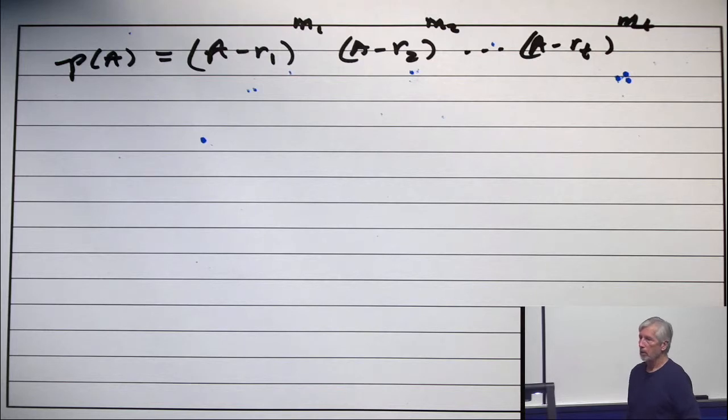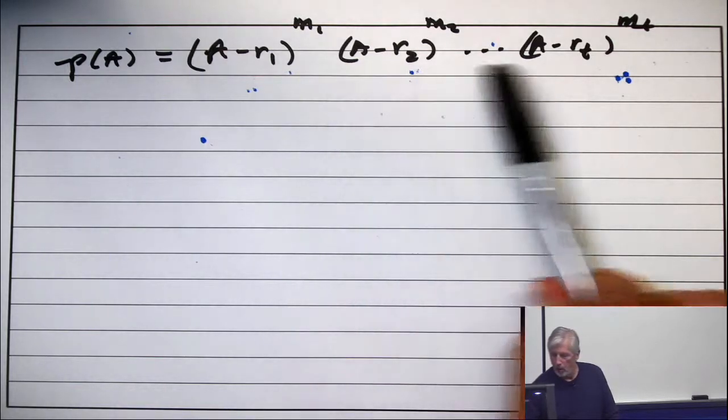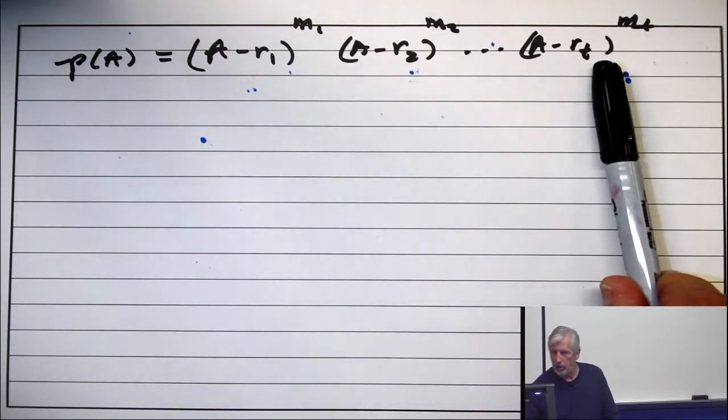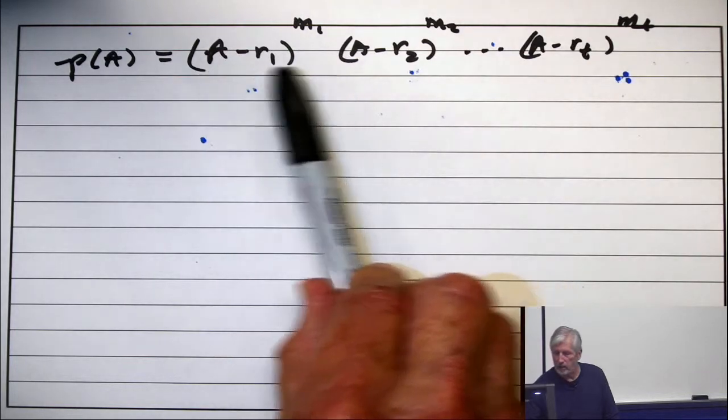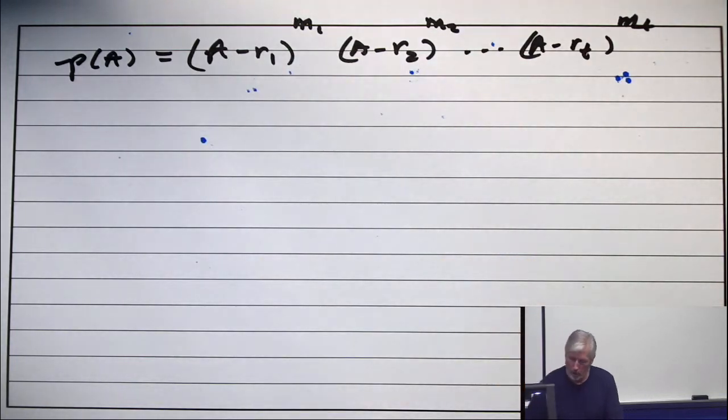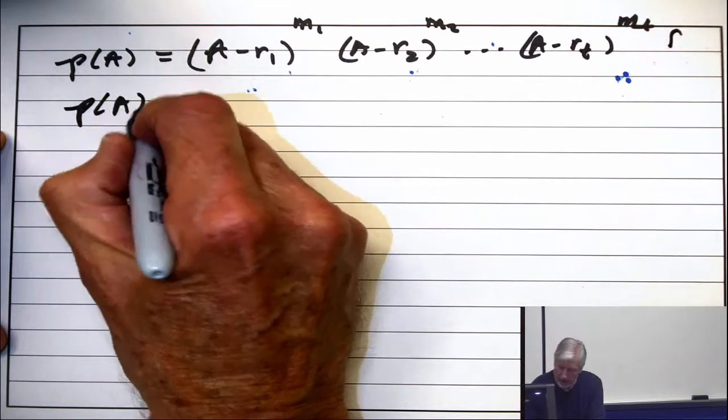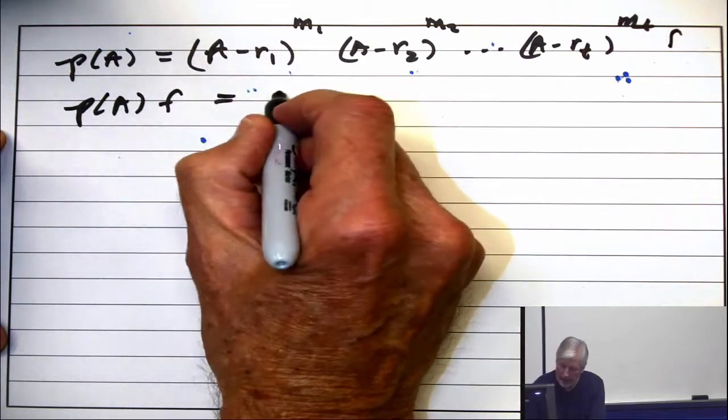You use the commutative law and induction. So apply this to a function, you have to get the solution to this. If you have a solution F, if you take P of A times F, apply it to F and you get zero.